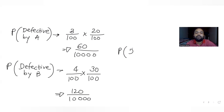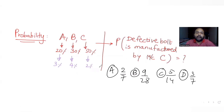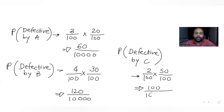The probability of manufacturing a defective product by machine C: 50% of the total bolts are manufactured by C, and 2% of that is defective. So we get 100/10,000.